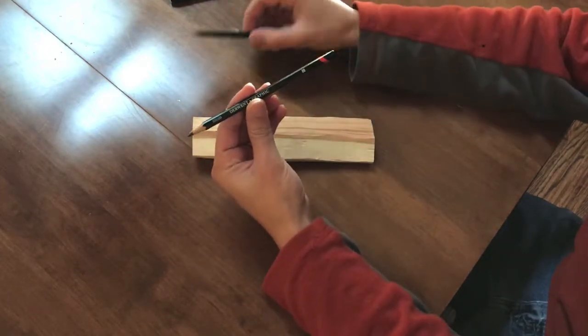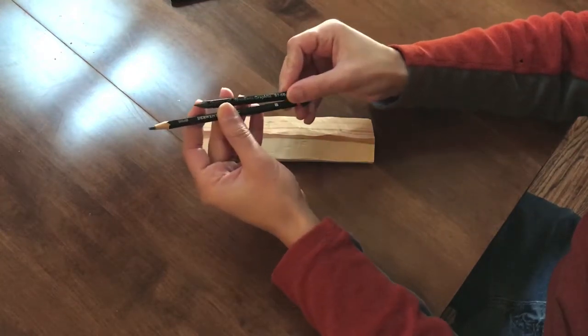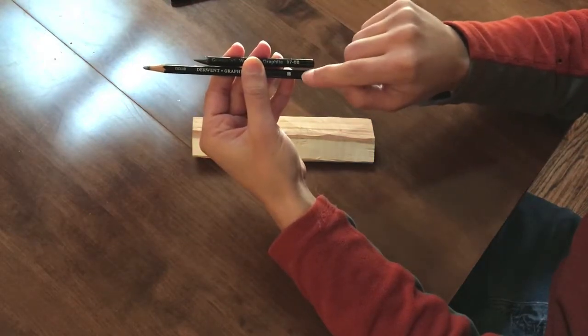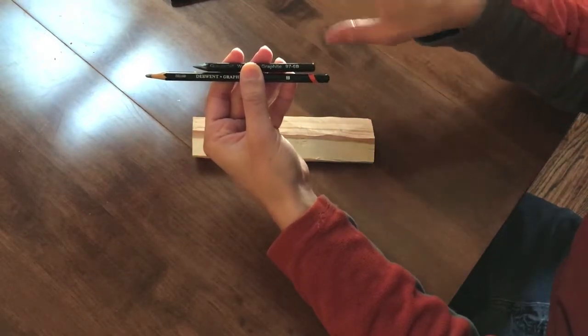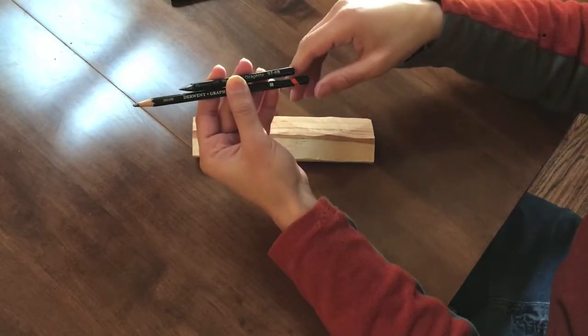So what I mean by a soft pencil is its number. Here you can see this is a 6B and this is an 8B. B is considered a soft pencil, H is considered a hard pencil. At school we use HB pencils, number 2 pencils.